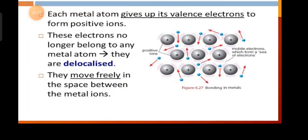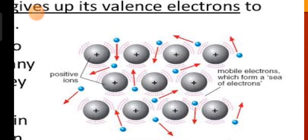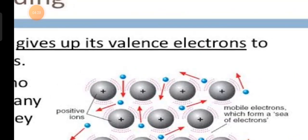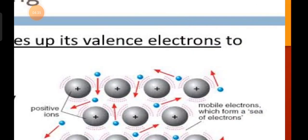The electrons are displaced from their specific positions in the valence shells and become delocalized — they move freely in the space between the metal atoms. The gray balls in the diagram represent metal atoms. When they lose electrons, they gain a positive charge and become positive ions. The removed electrons, now called free or mobile electrons, move rapidly and randomly in the spaces between the metal ions.